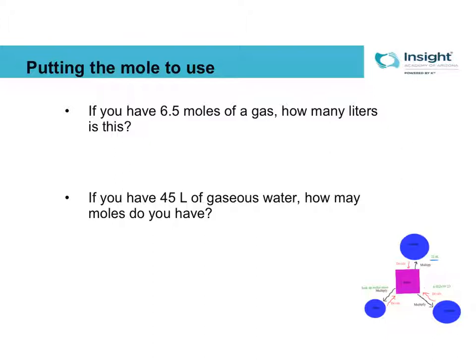Remember, everything you have will either tell you you're at STP or you can assume you're at STP. So we have 6.5 moles of a gas. How many liters is this? We are starting at moles and we are going to volume because liters is volume. So that means we are going to take this 6.5 and we are going to multiply by 22.4. And I get 145.6 liters.